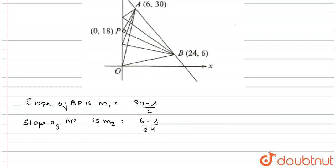So, tan theta will be M1 minus M2 divided by 1 plus M1 M2. This is the formula.